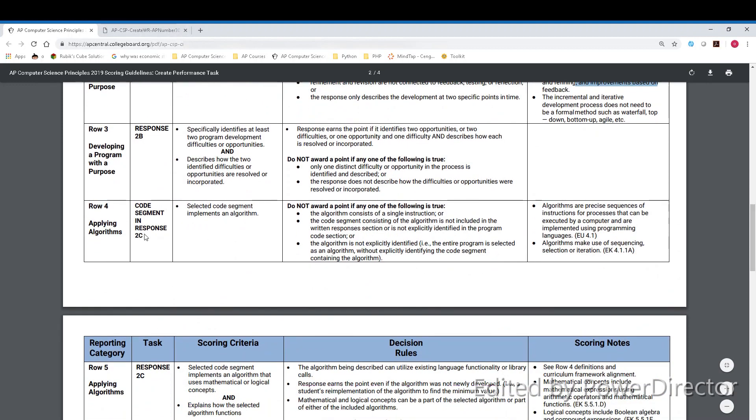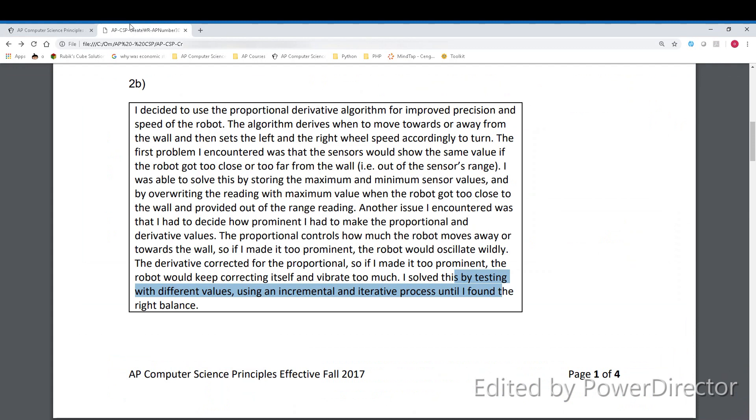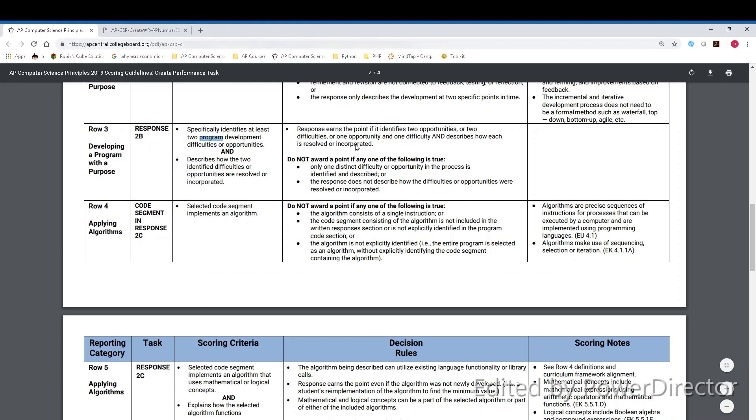The next row, row 3, also has to do with response 2b, and it involves identifying at least two difficulties in developing the program, so two problems I encountered, and how each problem was resolved. Going back to the written response, I noted that the first problem I encountered was that the sensors would show the same value, and then I noted that I resolved this by storing maximum and minimum sensor values. I also noted that another issue I encountered was that I had to decide how prominent I had to make the values, and I solved this by testing and refining. So I identified two problems, and identified how I solved them right after. By identifying this, I'd get a point for row 3.